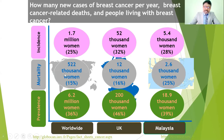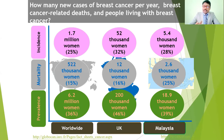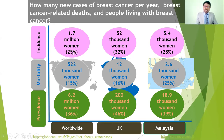Worldwide, 1.7 million women are getting breast cancer, which represents around 25 percent of all cancer cases. Of these, 522,000 are deaths, giving a mortality rate of around 15 percent. The worldwide prevalence is approximately 6.2 million women with breast cancer. According to UK statistics, 52,000 women are getting breast cancer, representing 32 percent, with 12,000 deaths and a prevalence of 200,000.